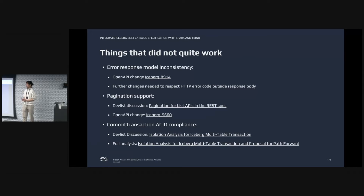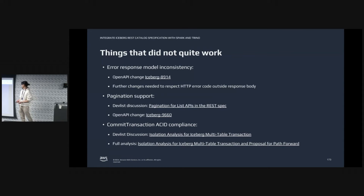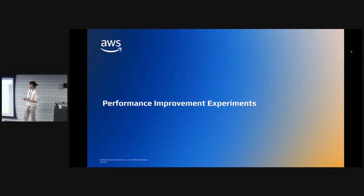Most of the things worked quite well. We are able to integrate the catalog with SigV4 for authentication internally in Amazon. We are able to convert the OpenAPI spec with our internal service definition models, and it works out of the box with Spark, Trino, and also all the Python engines, Glue ETL, Ray, etc. There are a few things that didn't quite work, such as error response handling, pagination support, and some discussions about commit transactions. But these are not the focus of this talk — I've left links in the presentation for more details.